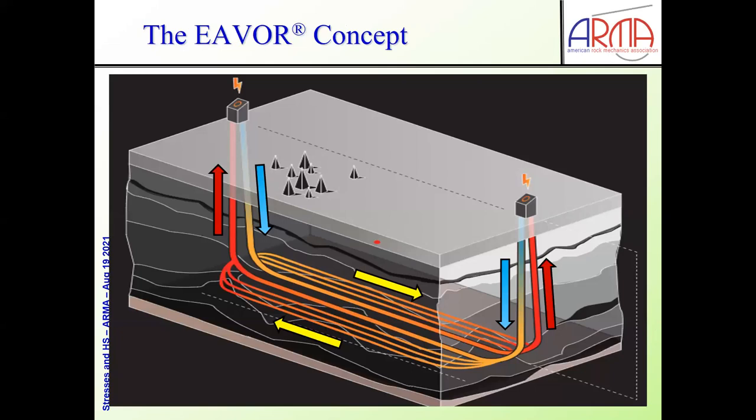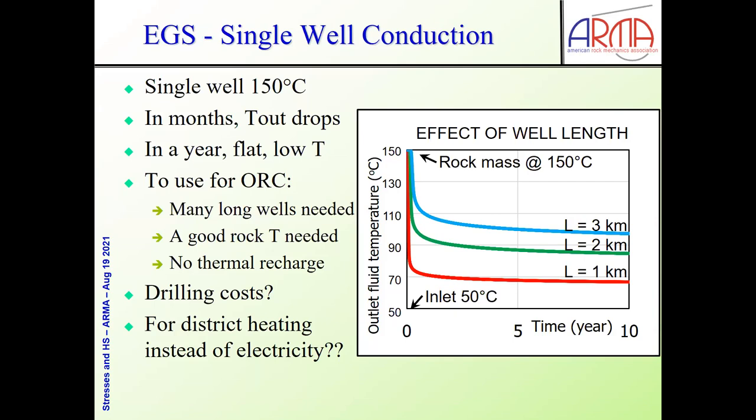This is the EVER concept. EVER is a company that has several patents associated with the wellbores and the process. This is called the EVER loop process, where we have flow in the direction indicated, operating an electricity production plant, and the fluids that are still warm coming out of the plant are recirculated continuously in this loop.